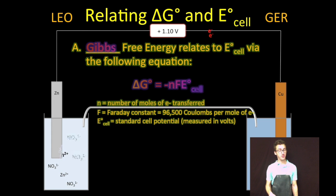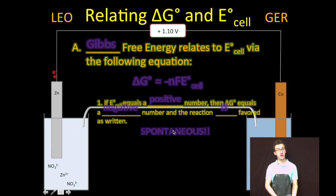To determine Gibbs free energy from cell potential, you also need to know the number of moles of electrons transferred in the redox reaction and Faraday's constant, which is 96,500 coulombs per mole of electrons. All of this is on your formula chart, so the math is pretty straightforward.